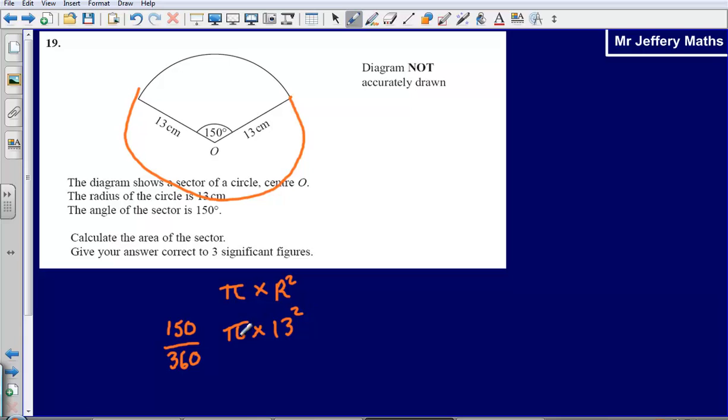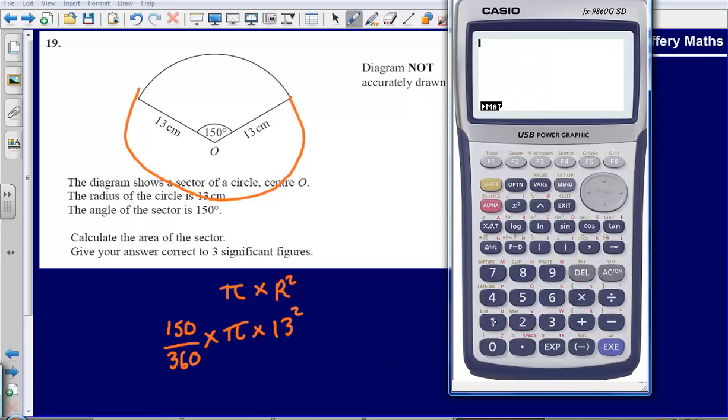Now if I have worked out the area for the whole circle, π times 13 squared, to work out just for 150 degrees out of 360, I could just multiply that fraction by my area. Now putting this into a calculator, that's going to tell me what the area of that sector will be.